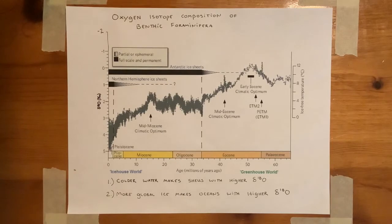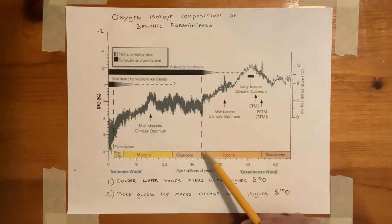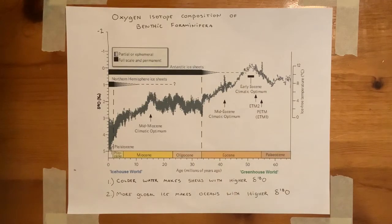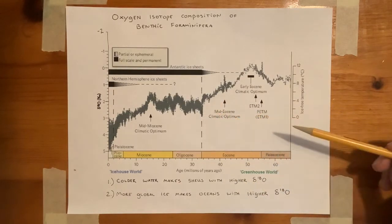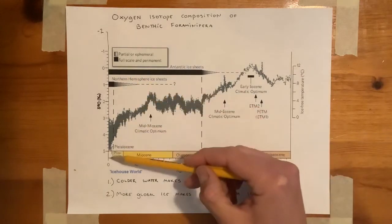If we look carefully at this plot, we can see that the appearance of continental ice sheets on Antarctica marks the end of the Eocene era. More importantly, it is also accompanied by a sudden increase in foram delta-18O values — this jump — and remember that the axis here is flipped.